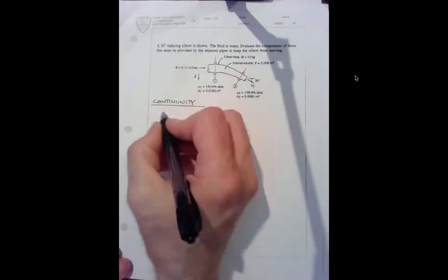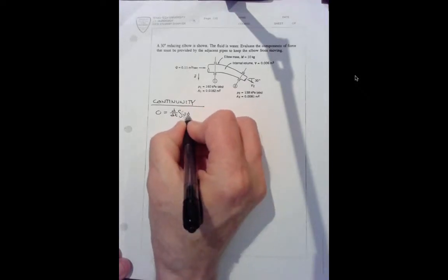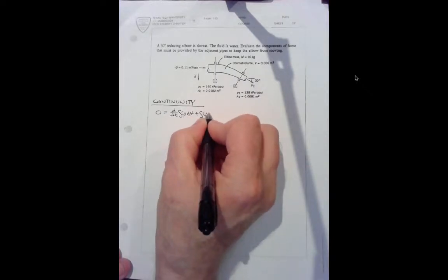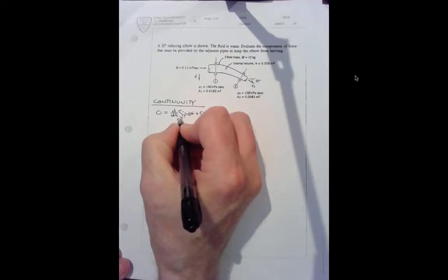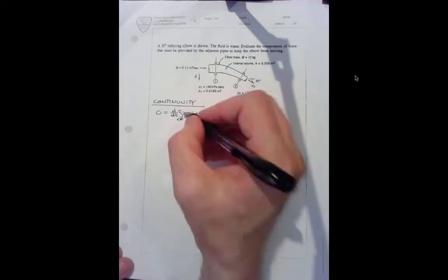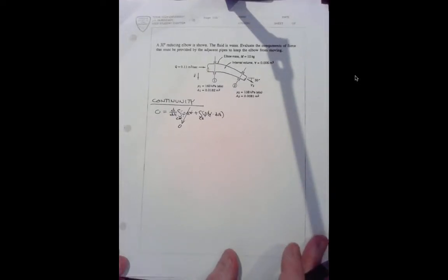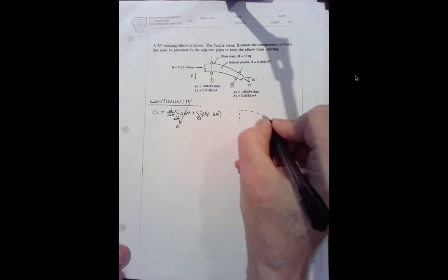And zero equals d by dt integral rho d volume plus the integral of the control surface of rho v dot dA. That's going to vanish steady flow and non-deforming control volume. Let's draw that control volume. It's this guy right here.